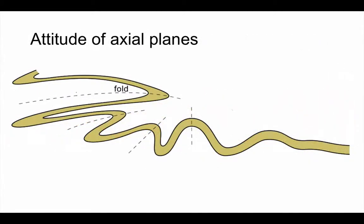We also need to consider the attitude of axial planes. Again, on this diagram we have a bed that's been folded and some axial planes that are shown by the series of dotted lines. We can have a fold that's upright, where the axial plane is vertical, often found in symmetrical folds, but not always.